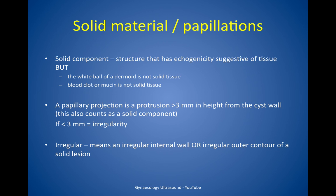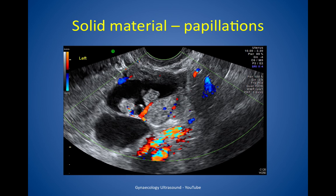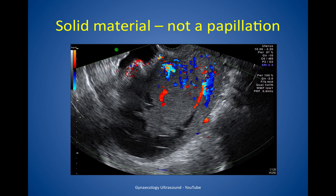Solid material and papillations. A solid component is a structure that has echogenicity suggestive of tissue, but with some exclusions: the white ball of a dermoid is not solid tissue, and blood clot or mucin is not solid tissue. A papillary projection is a protrusion of 3mm or more in height from the cyst wall, which counts as a solid component. If the lesion protrudes less than 3mm it counts as an irregularity. An irregularity means either an irregular internal cyst wall or an irregular outer contour of a solid lesion.